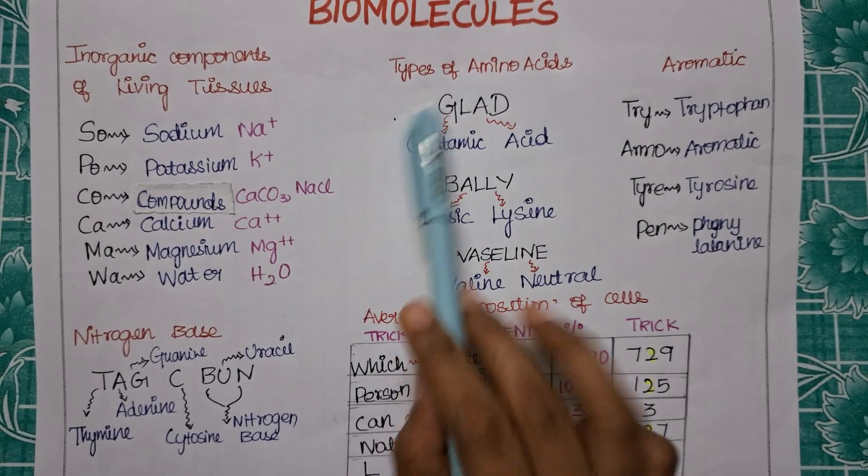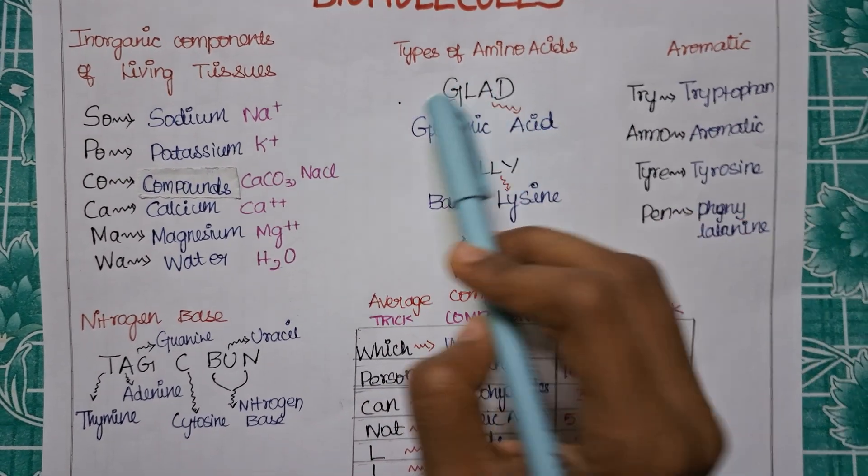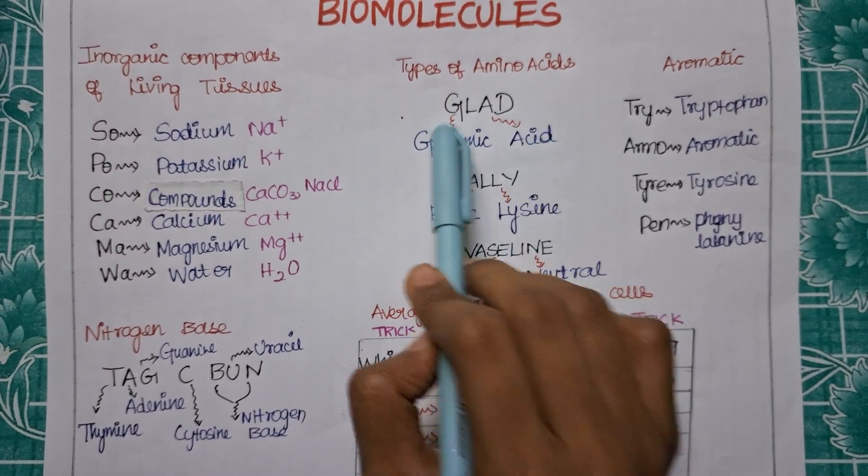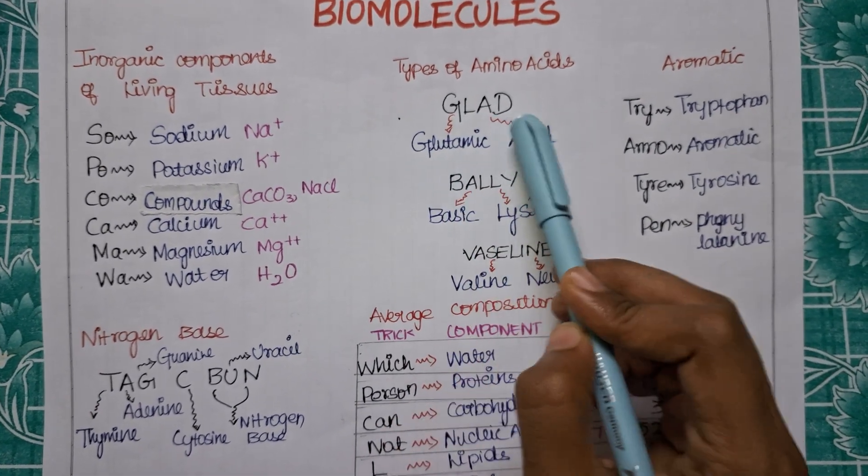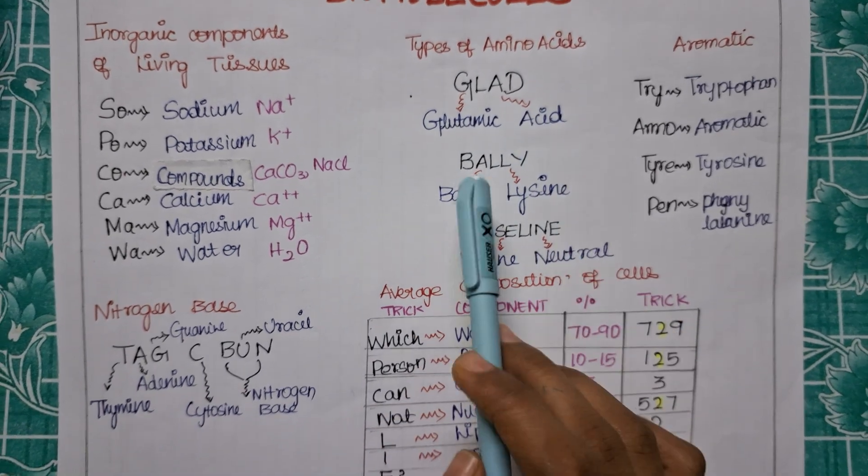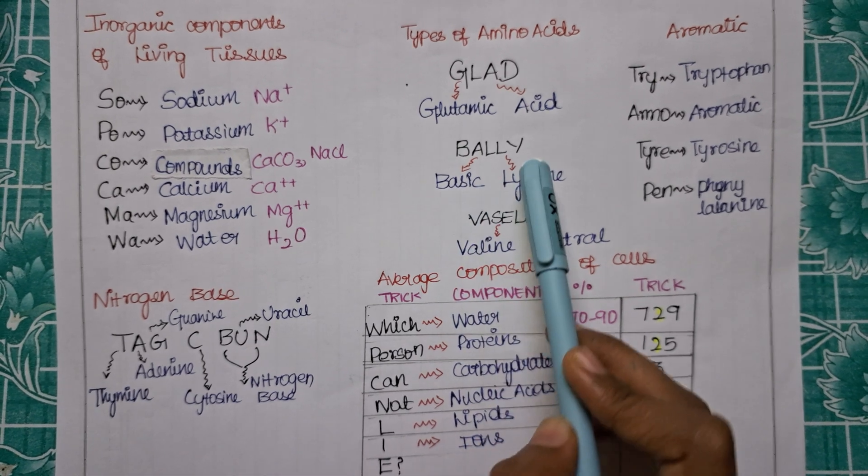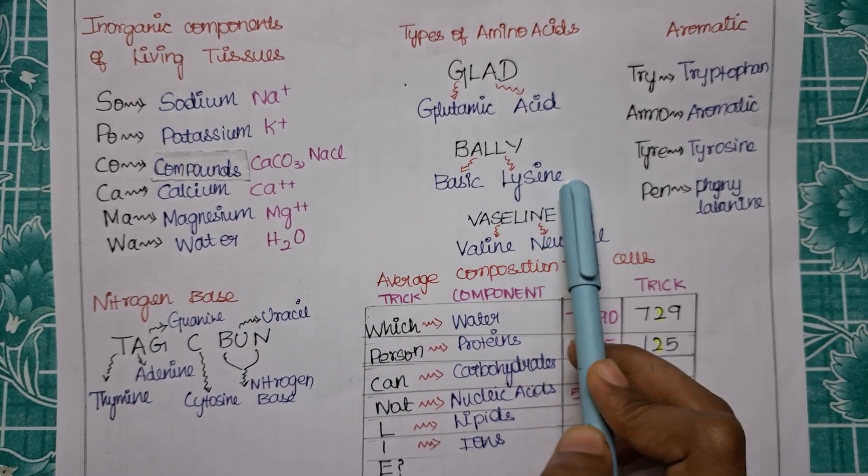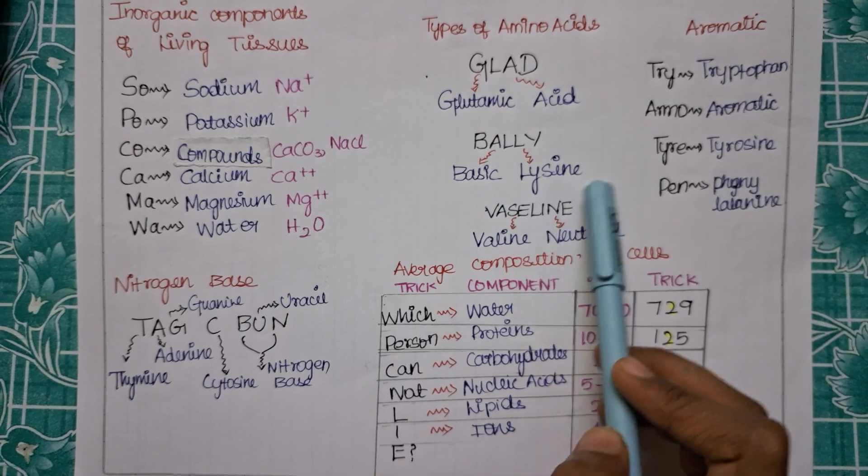These tricks are made along with the example also as per your NCERT. The first trick is GLAD. GLAD means GL is for glutamic, AD is for acid. So glutamic acid. Now BALLY - BA is for basic, LY is for lysine. So basic, your example for your basic will be your lysine.